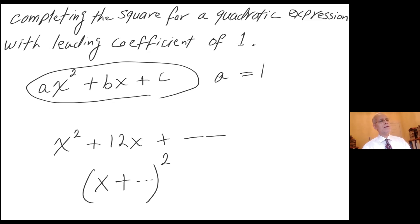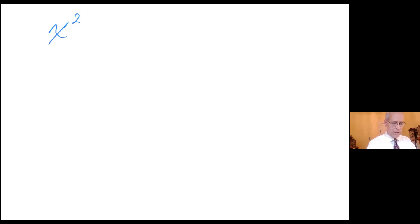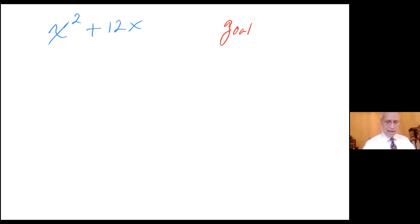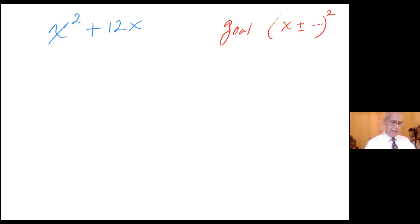So let me go ahead and go to the next page and do a couple of examples. Remember, in this video we need the coefficient of x squared to be 1. So how about something as simple as x squared plus 12x. The goal is to have it as x plus or minus something, quantity to the second power. Notice that in here, my a is 1 and my b is 12.